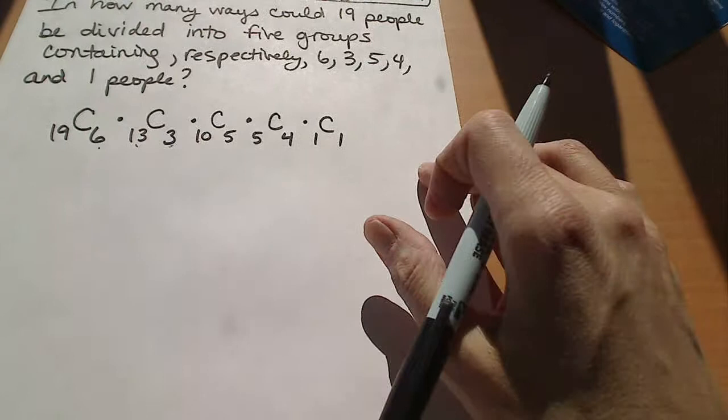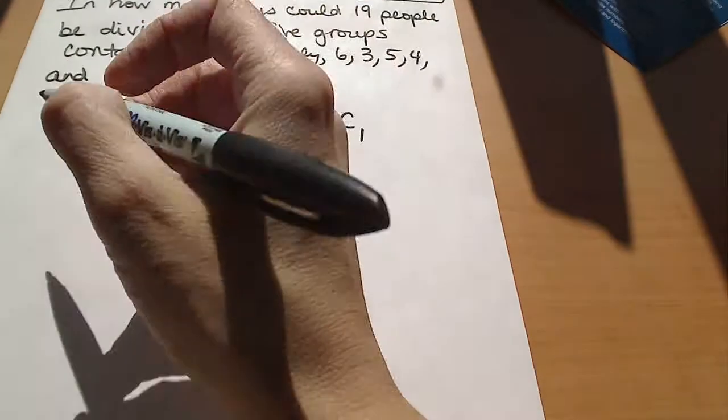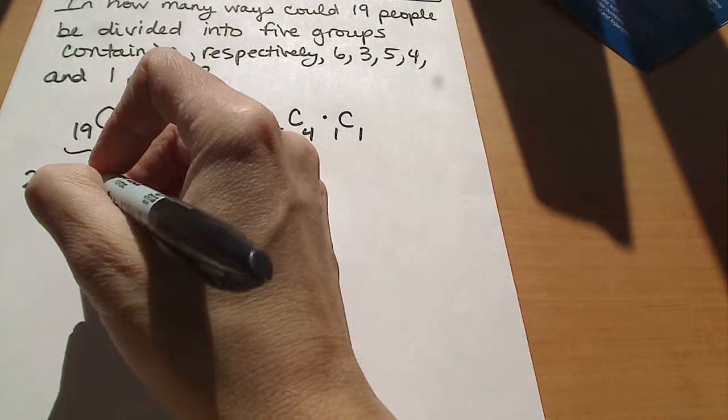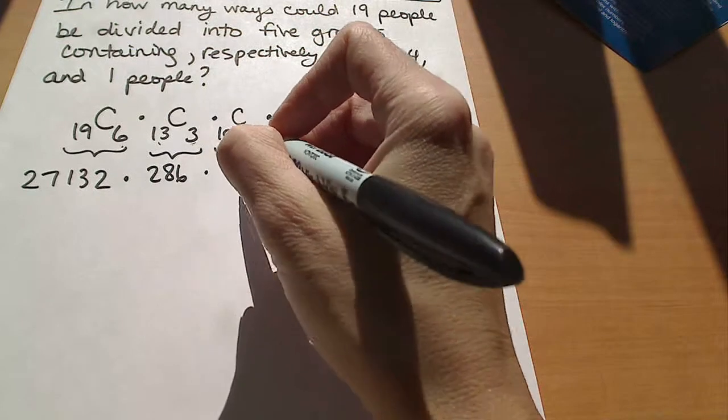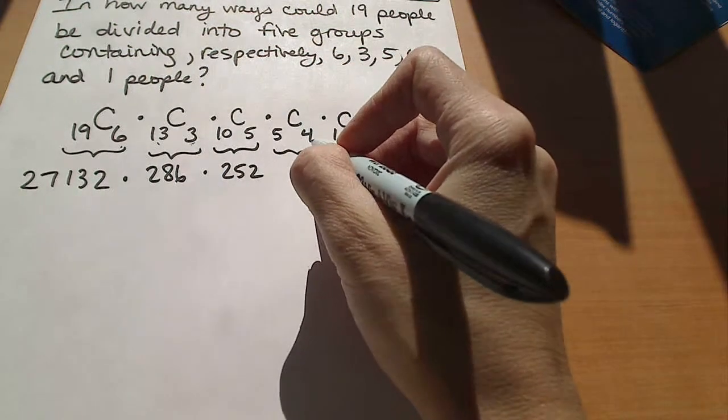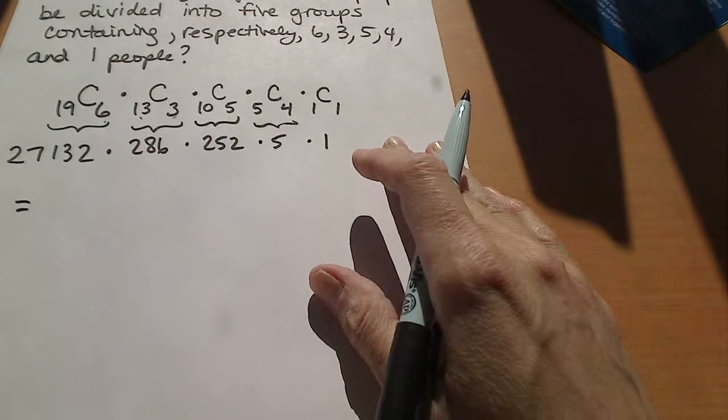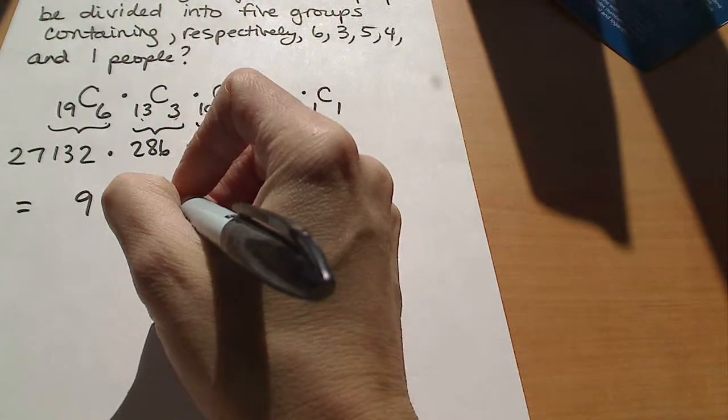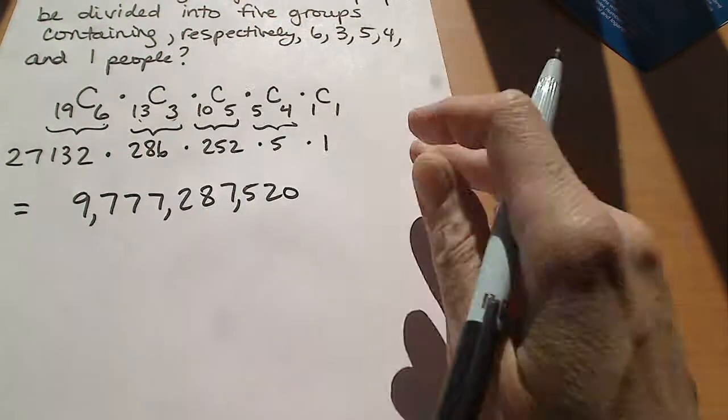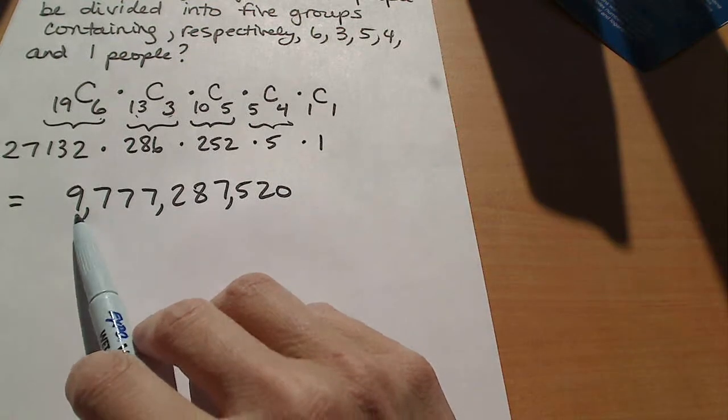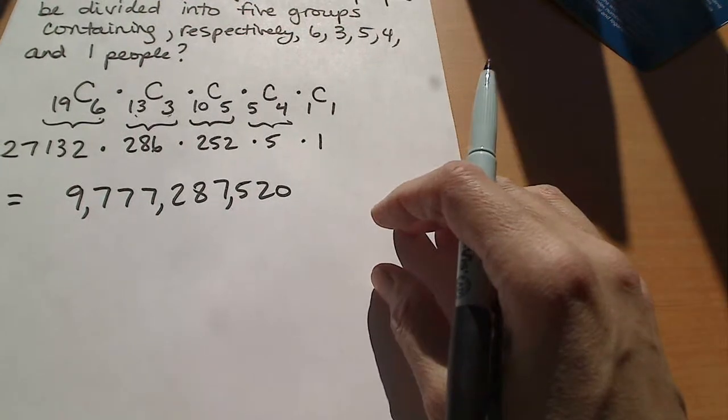Okay. So when you do the calculation of that, if you're using your calculator to get those combinations, you should definitely use the calculator. It's going to be big. This right here ends up being 27,132. This number right here ends up being 286. This number here, 252. This calculates out to be a 5. And this is a 1. And when we do that product, multiply that out, you get this number here. So that's a really big number. That's a million trillion. So that's 9,777,287,520 different ways. That's a lot.